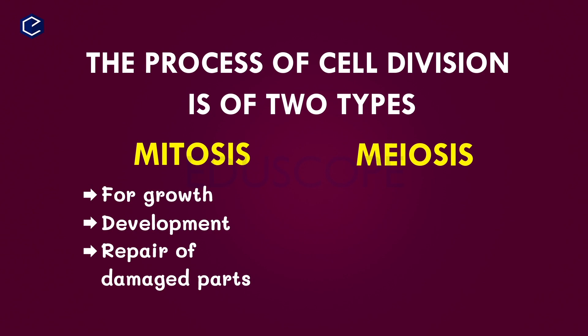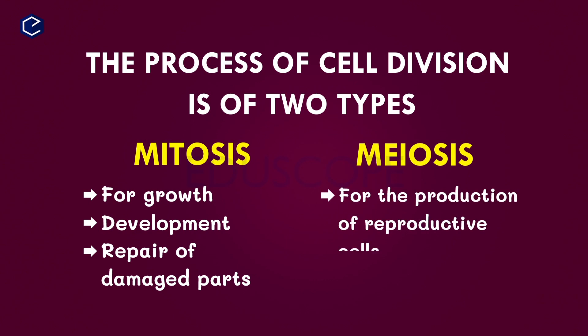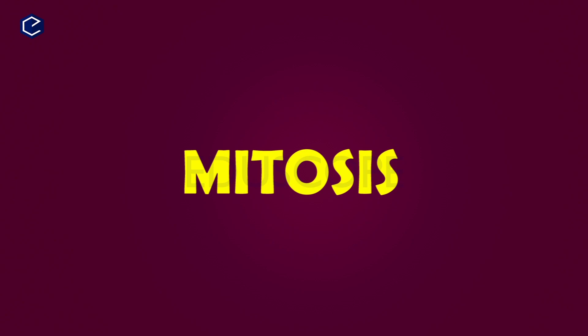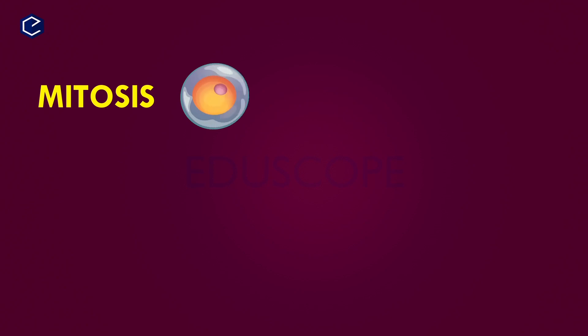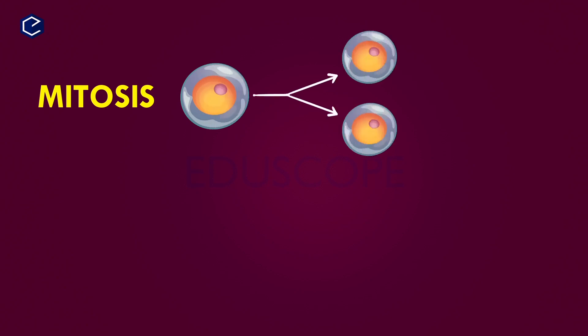With the help of meiosis, the body produces reproductive cells. These include sperm cells and egg cells. The production of reproductive cells occurs through the meiosis process.